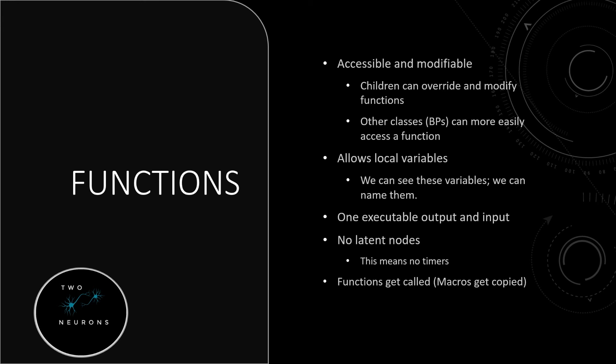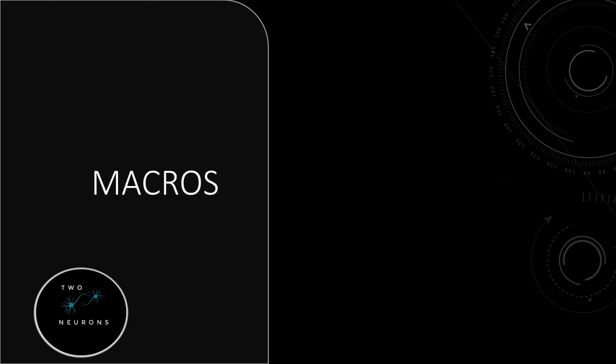Macros get copied. This is why other blueprints can't easily access macros — there are ways around that with a combination of functions and macros, but we'll talk about that later. Macros allow latent nodes, which is the main reason I'll use them in this series — when I want a latent node and don't want it cluttering up my graph, macros are a great solution. That means we can have timers and certain events that run on timers.